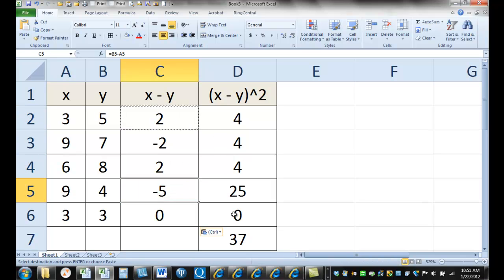So one of the things that this precursor to the variance gives us is the magnitude of the differences. It doesn't matter if you subtract x from y or y from x. As long as you're going to square them and add them up and get 37.